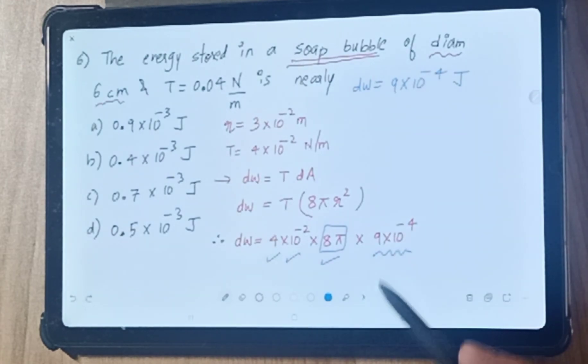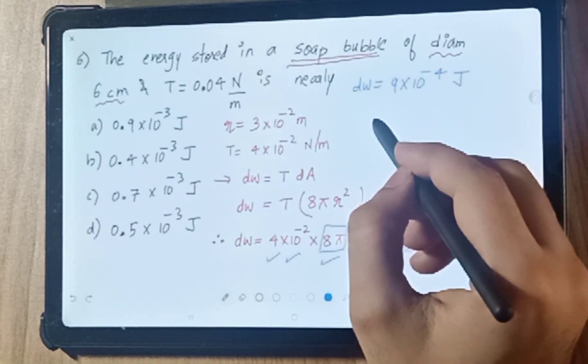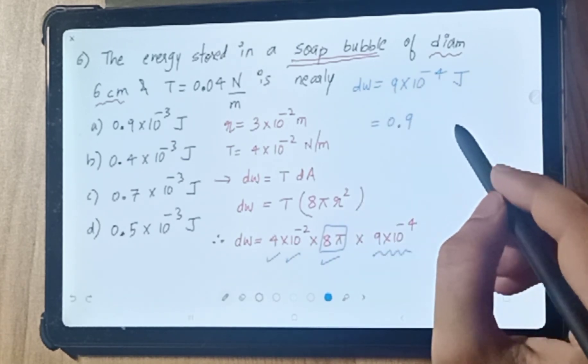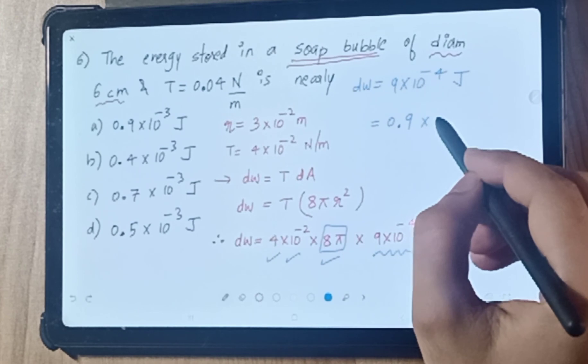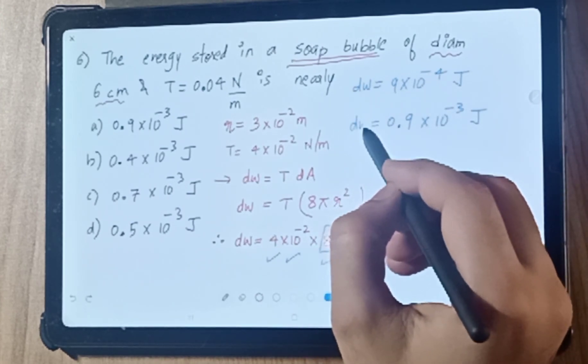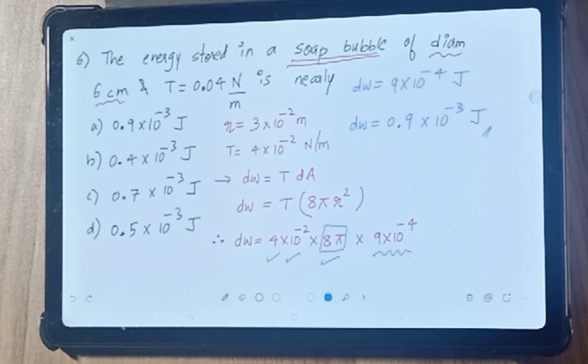Now students, looking at the options, the requirement is to write this as 0.9 instead of 9, so 10⁻⁴ becomes 10⁻³ joule as it is. This is your DW.